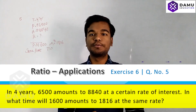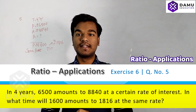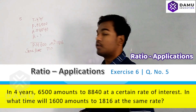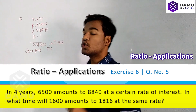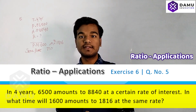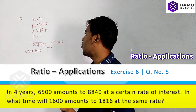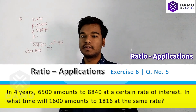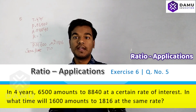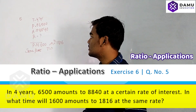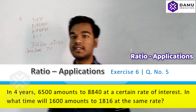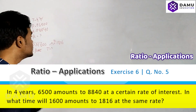Hello viewers, nice to meet you again. Please watch the video till the end. Our fifth question: in time four years, the principal six thousand five hundred rupees gets an amount of eight thousand eight hundred and forty rupees at some certain rate. What we need to find is how much time it will take for a principal of one thousand six hundred rupees to get one thousand eight hundred and sixteen rupees at the same rate.